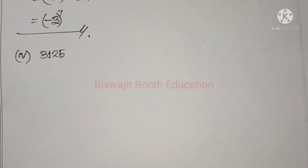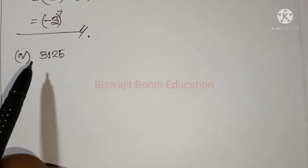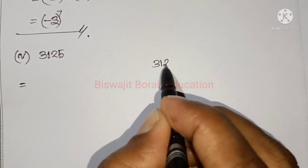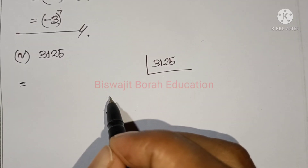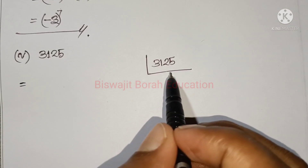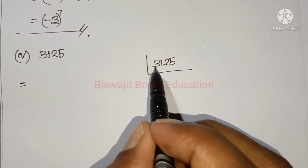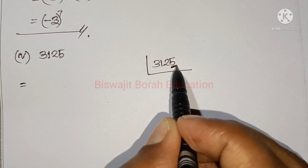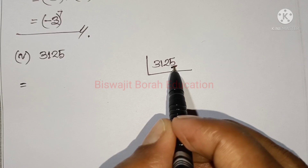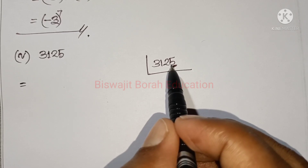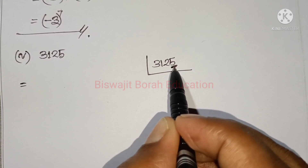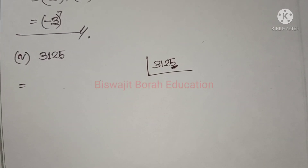Number 5: the number given to you is 3, 1, 2, 5 — so 3125. Where will 3125 go? You are told that this number will go to the power of 5. Why will it go to the power of 5? Because every digit of this number must be divisible — if divisible, it goes inside the bracket; if not, it goes outside.